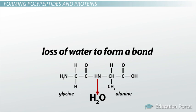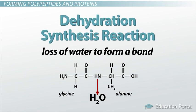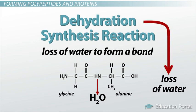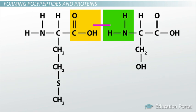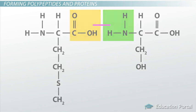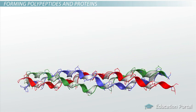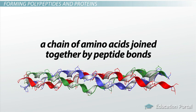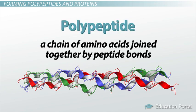This loss of water to form a bond is called a dehydration synthesis reaction. It's easy to remember if you recall that dehydration is a loss of water, and synthesis means to build, so a protein is built through dehydration synthesis. Of course, simply joining two amino acids together is still a long way off from having a protein. More amino acids need to join up until you have a chain of amino acids joined together by peptide bonds, which gives us a polypeptide.